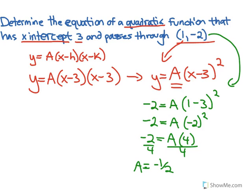So a equals negative two over four, which is negative one over two. So my final equation for the quadratic in factored form is y equals negative one half (x - 3) squared.